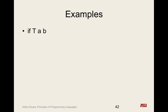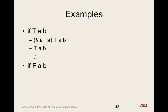Example: if true A B. Our if is lambda A dot A, so we replace A with true, giving true A B. True returns its first argument, which is A — exactly what we want. For if false A B: replace A with false, giving false A B. False returns its second argument, which is B. So we have a working if-then-else in pure lambda calculus.